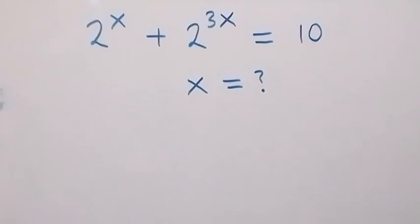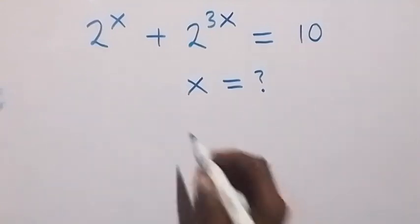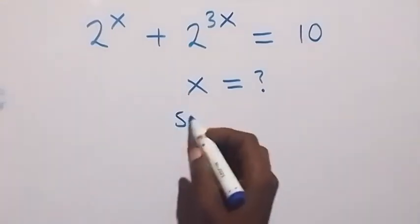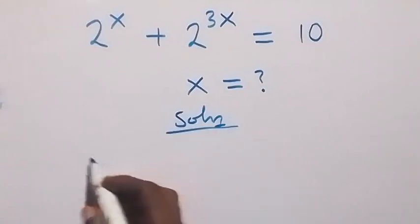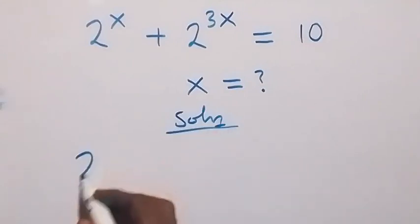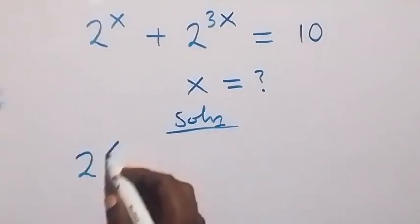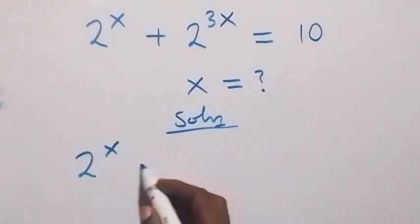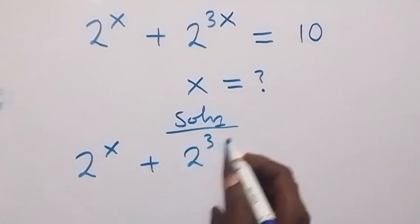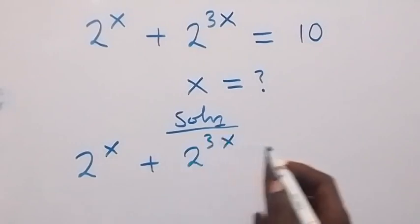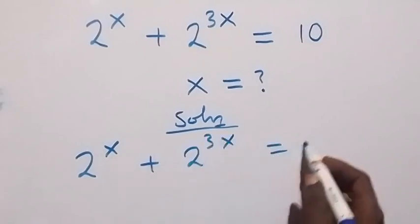Hello y'all, welcome to solve for x in this nice exponential equation. From what is given, we have 2 raised to power x plus 2 raised to power 3x equals to 10.